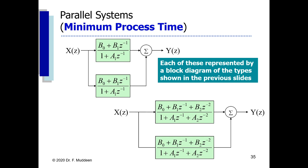This brings us to the end of the transfer function realization lecture. We observed how to represent block diagrams in four forms: the direct form, the canonical form, the cascade form, and the parallel form.